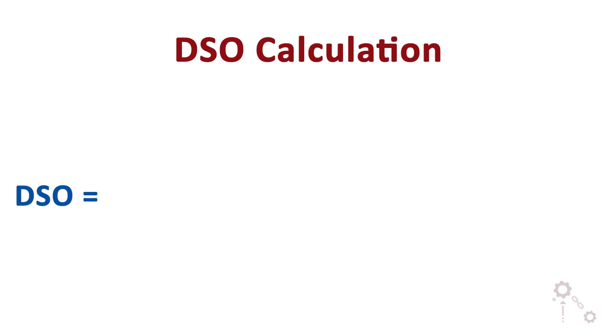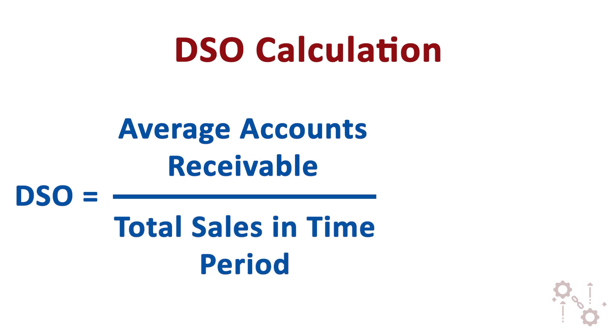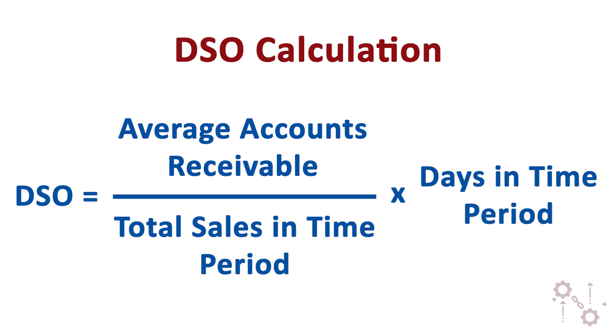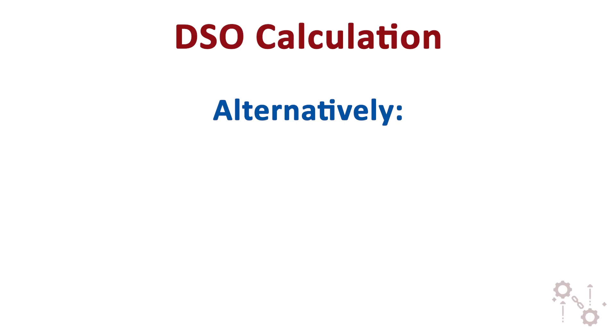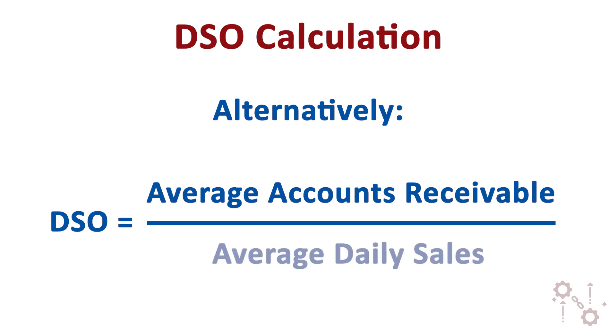To calculate DSO for a certain time period, we take our average accounts receivable over that time period and divide it by our total sales in that same time period, then multiply by the number of days in that time period. An important detail: total sales includes both cash and credit sales. An alternative way to calculate DSO is to divide average accounts receivable by average daily sales — but it's all the same. Let's look at an example.